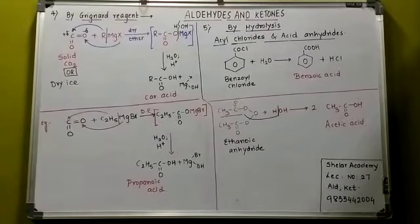Lecture No. 27. The next method of preparation of carboxylic acids is called dry ice, the same as solid carbon dioxide.